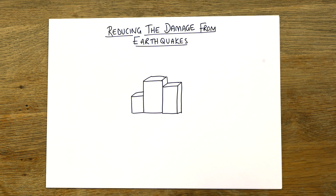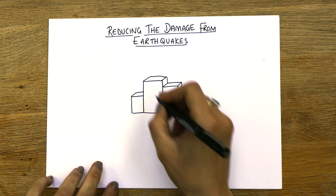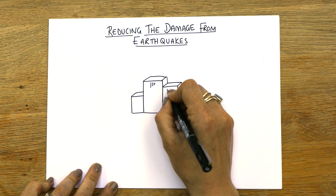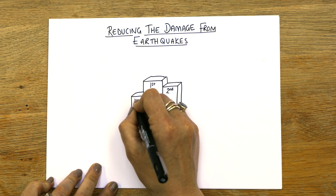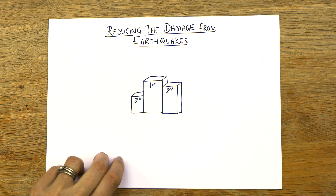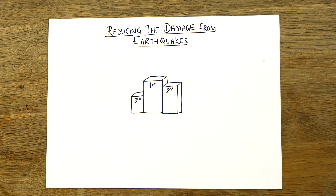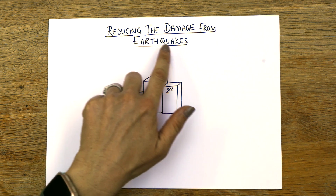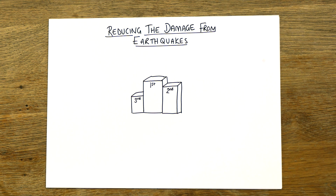Start by drawing a podium — we've got first, second, and third. This video is gonna walk you through methods of reducing the damage from earthquakes. This is very often one of those longer mark questions, either a six or very possibly a nine, and it is the three P's. When you see 'reducing the damage', you need to think three P's: protection, planning, and prediction.